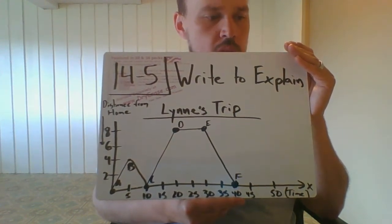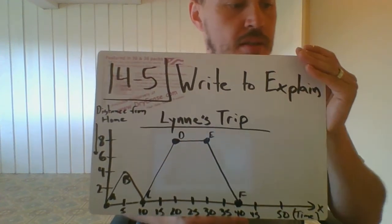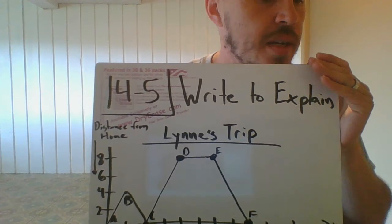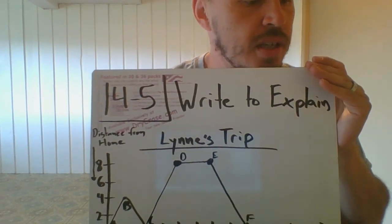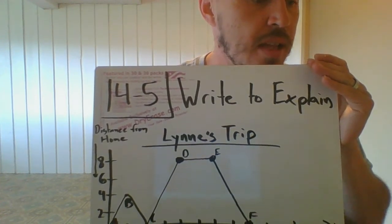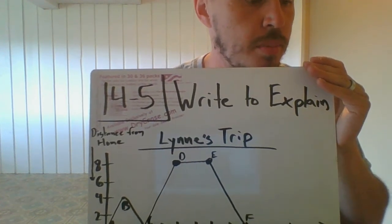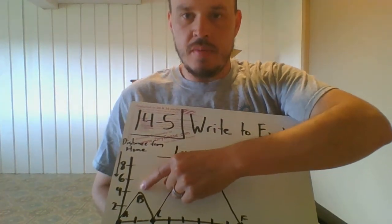I'm just going to go ahead and read to you number one and talk about some of the answers today. Number one in guided practice page 336 reads: how would you infer - I always think of inferring as reading between the lines - how would you infer that Lynn was not at the grocery store at point B on the graph? So you'll see point B right here.